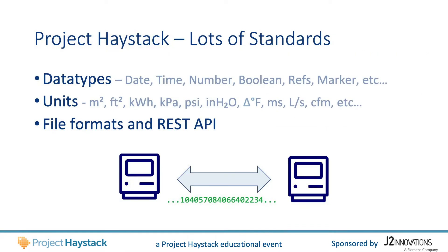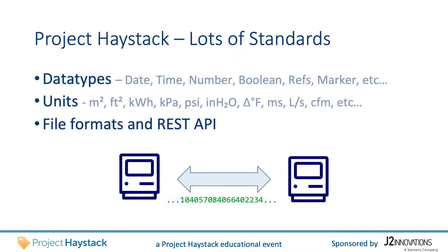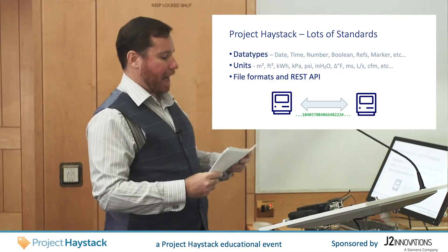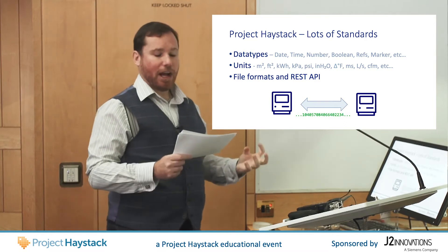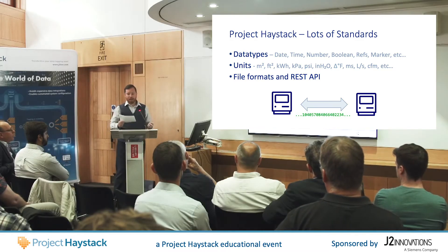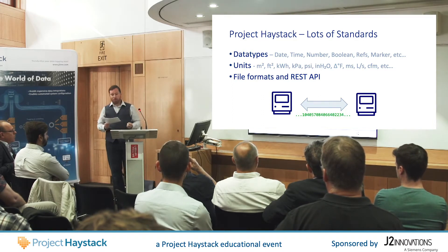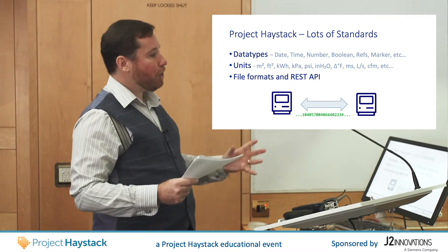Project Haystack is more than just a tagging standard. It's about interoperability between different computer systems. It defines the types of data that can be tagged — dates, times, numbers, booleans, references and so on. And if you have a number, Project Haystack also defines the units, so we know if we're talking about square feet, square meters, pascals, degrees Celsius, whatever. When kitting out a building, we're going to have lots of different devices, computers and equipment from different vendors. So Project Haystack defines file formats, so your cheap Chinese temperature sensor can seamlessly talk to your gateway. In today's age of Internet of Things, everything is networked, so Project Haystack also defines an Internet REST API. It's all about communication and interoperability so you can avoid vendor lock-in.